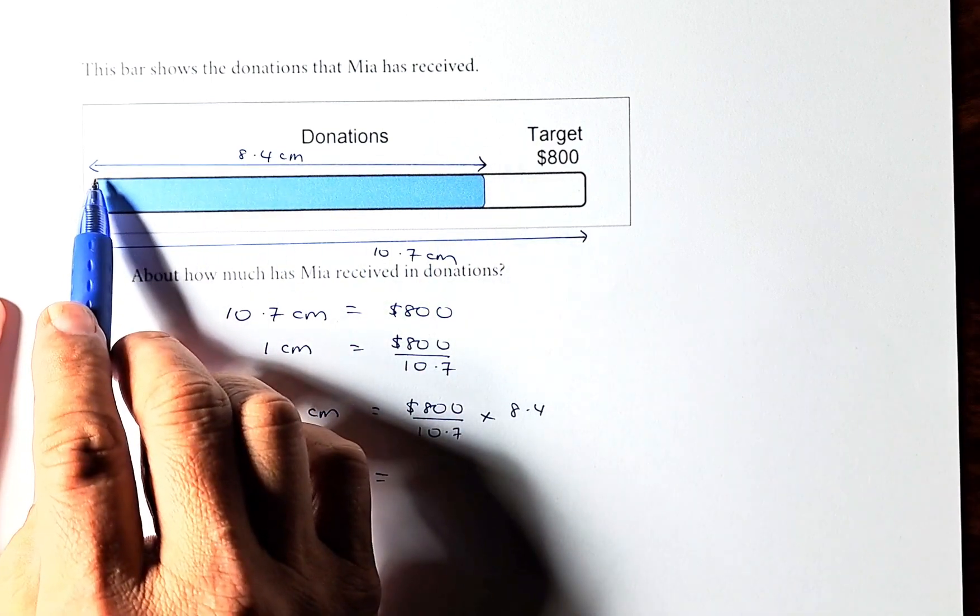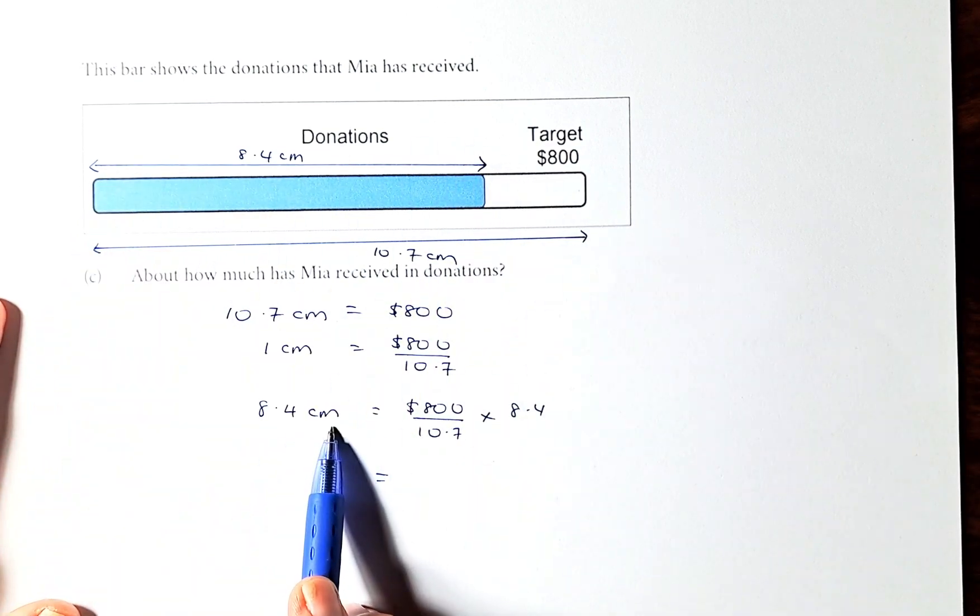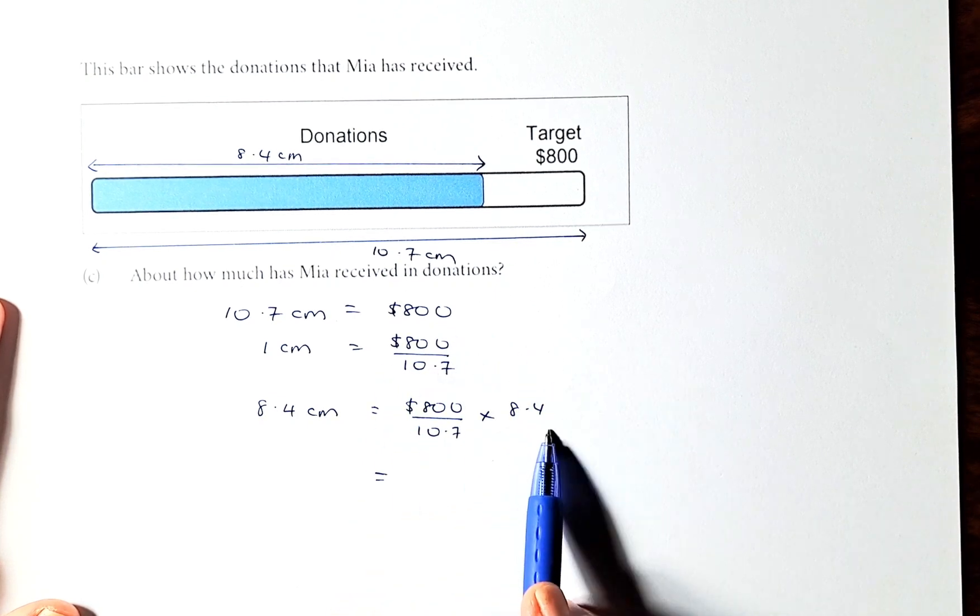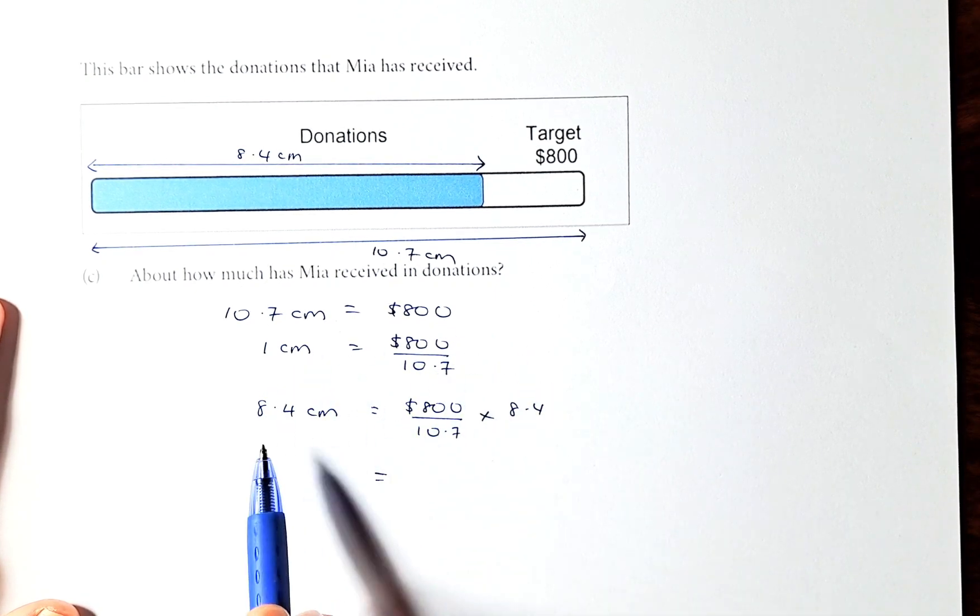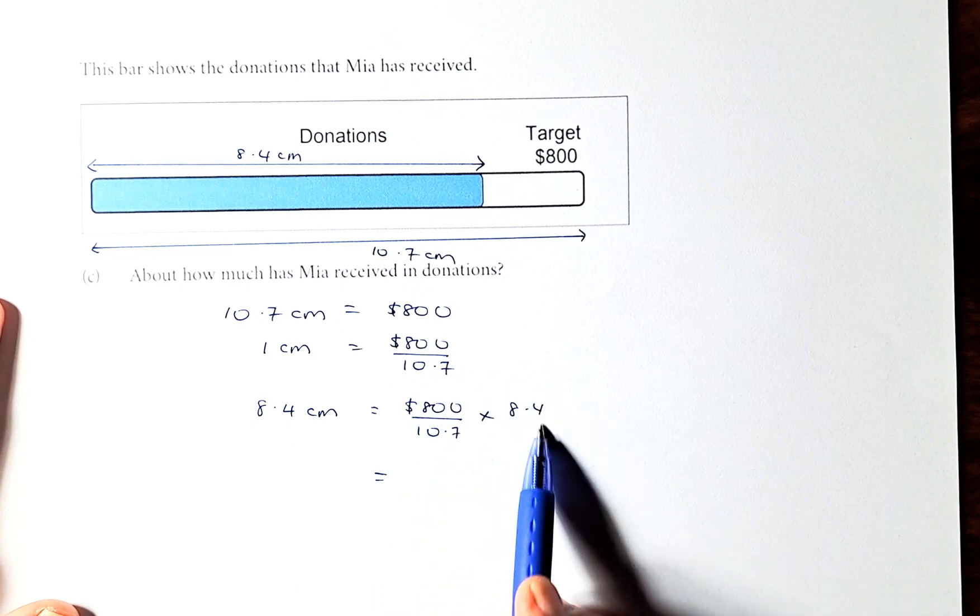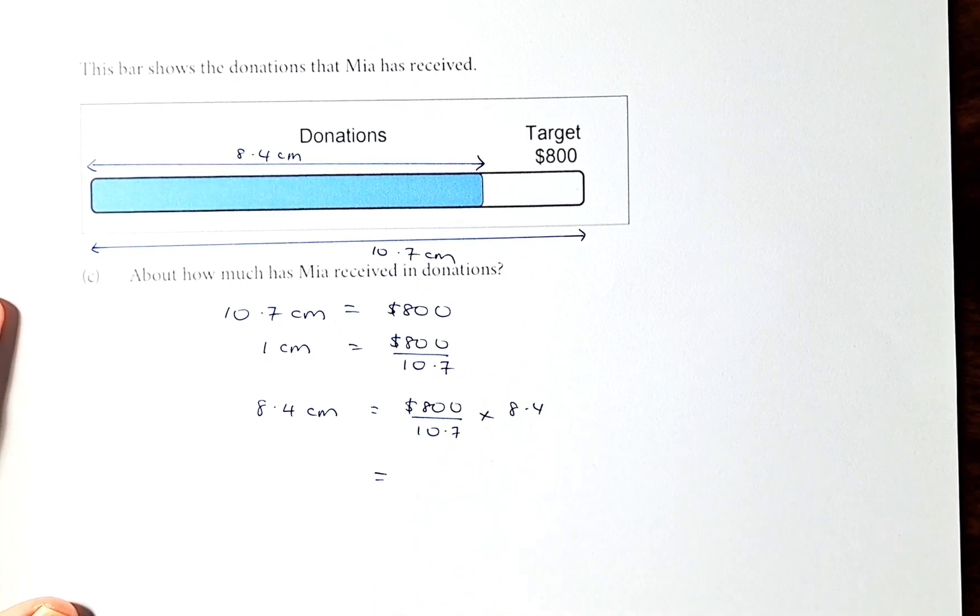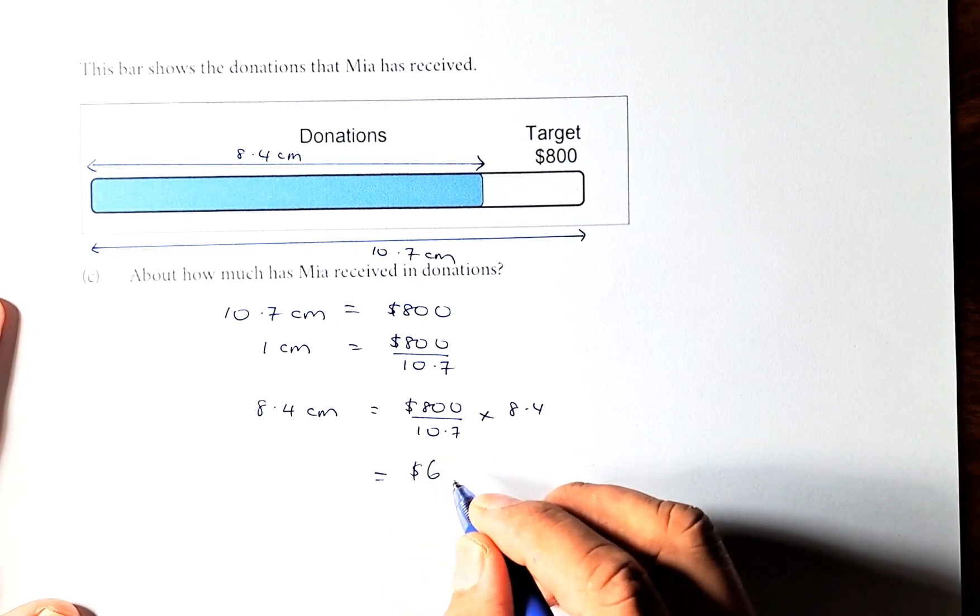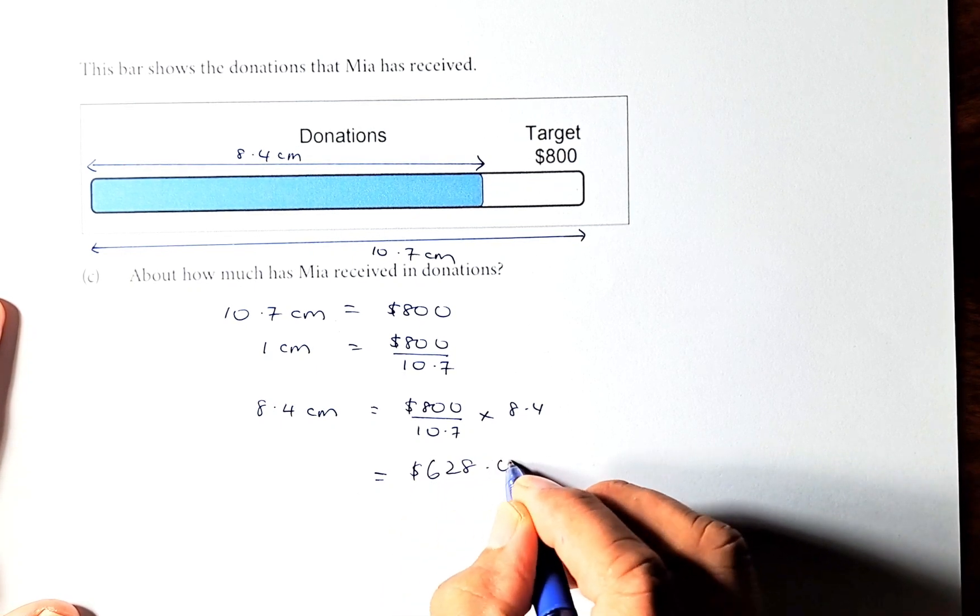And to know the length of the blue line is 8.4cm. We calculate, you use the ruler and measure it, it's 8.4cm. So 8.4cm is this amount here multiplied by 8.4 because 1cm is this amount. 8.4 will be that amount multiplied by 8.4 and I have done the calculation. It's going to be $628.03.